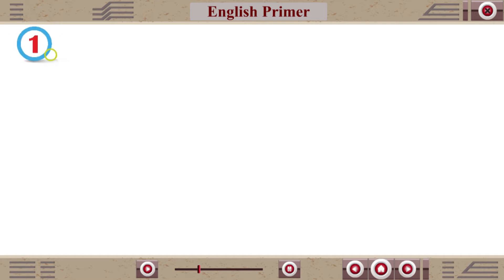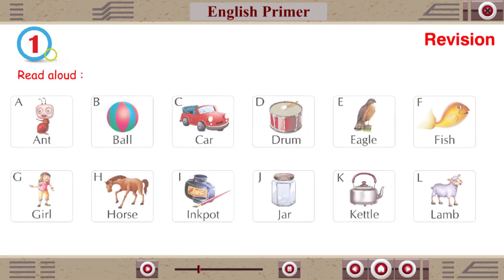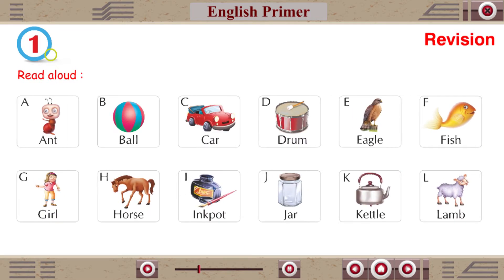Chapter 1 Revision Read Aloud. A for Ant, B for Ball, C for Car, D for Drum.